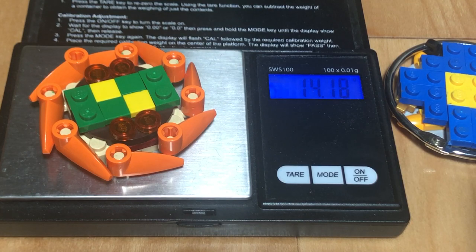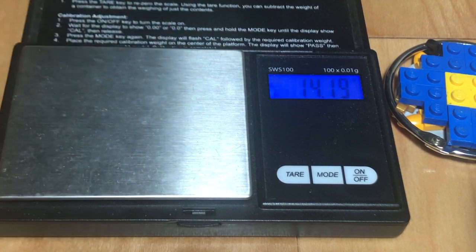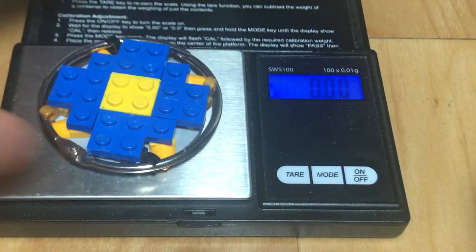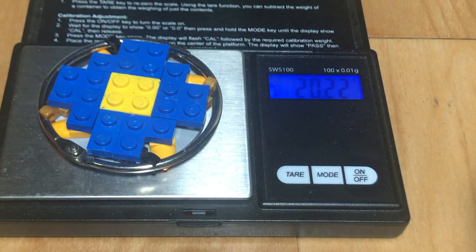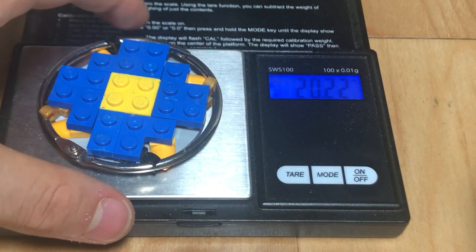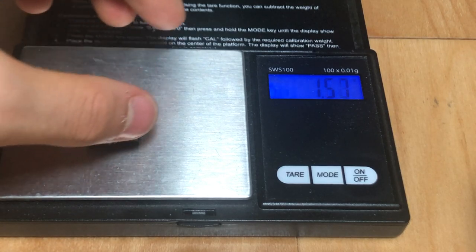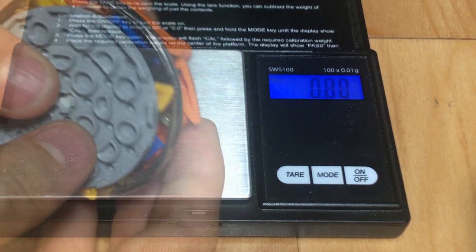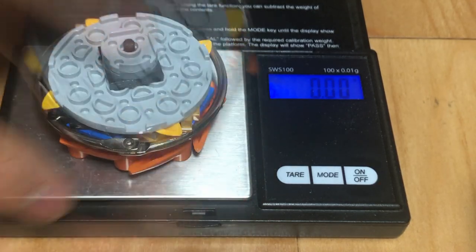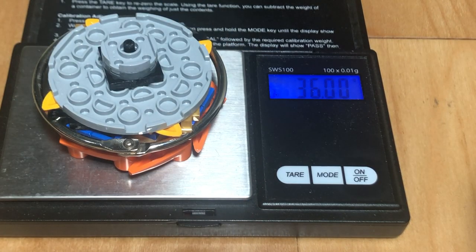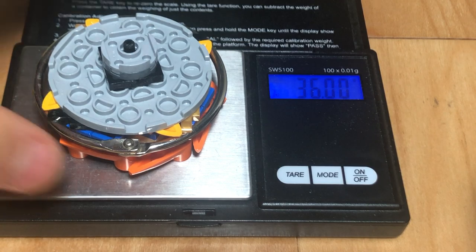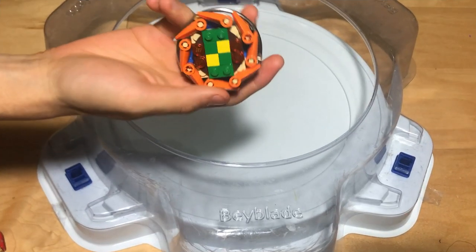So the Asura dash layer weighs 14.19 grams. The paradox weight, of course, since it's so outside, is really light at 20.22 grams. And then the driver, 1.57 grams. Putting it together, we have the full LEGO Asura dash combo at 36 grams. And finally, test launching the prize bag LEGO Asura dash.